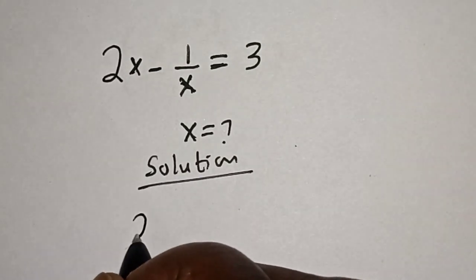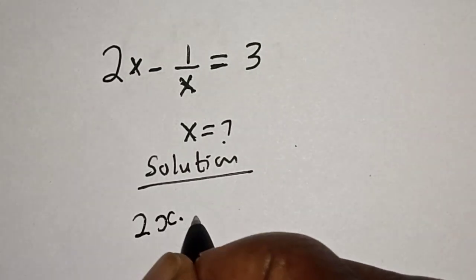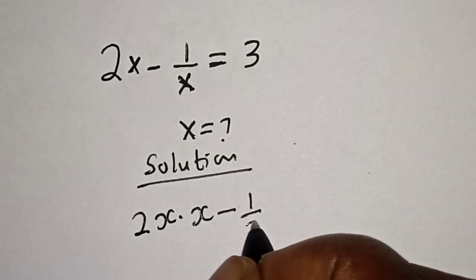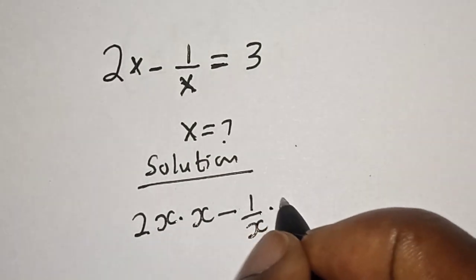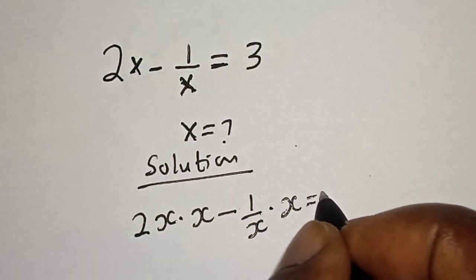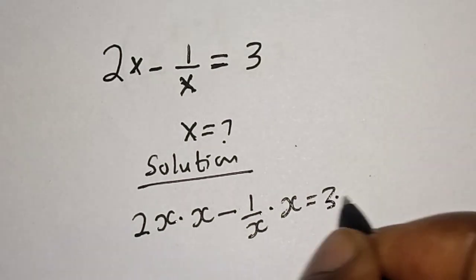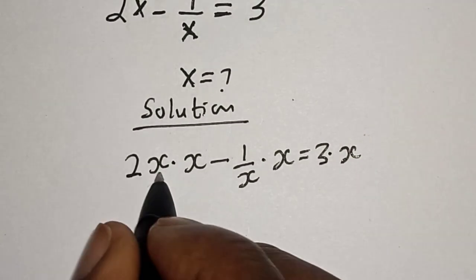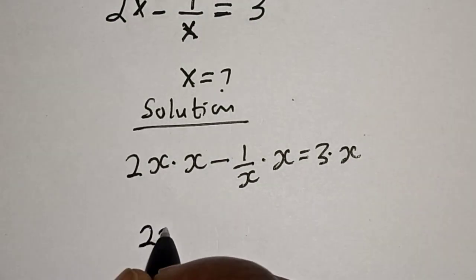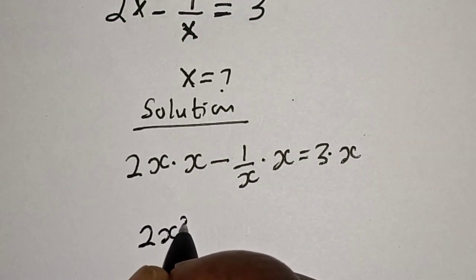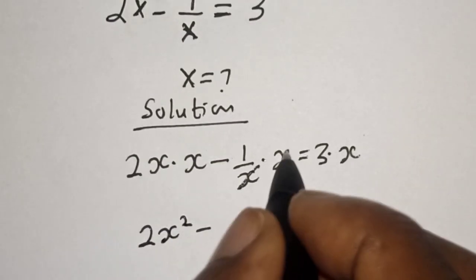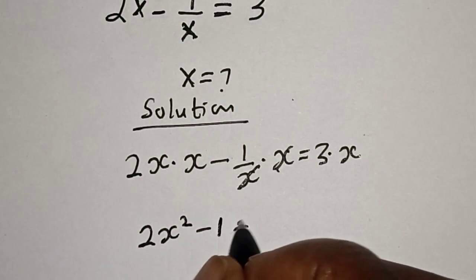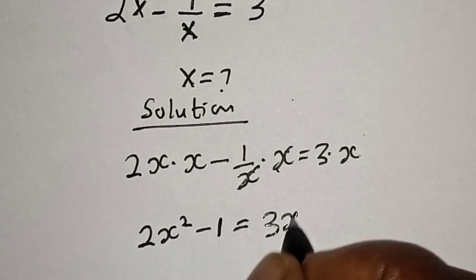Then we have 2s multiplied by s minus 1 over s multiplied by s is equal to 3 multiplied by s. This gives us 2s squared minus 1 is equal to 3s.